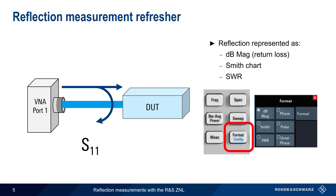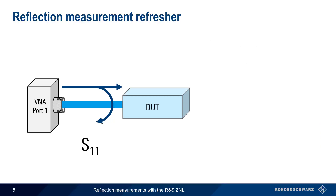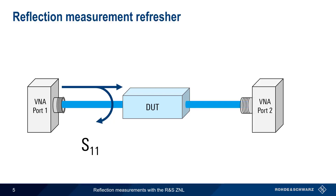One final note: in this presentation, we're explaining reflection measurements using one-port devices, but it's important to know that reflection measurements can, and often are, made on multi-port devices as well. For example, we might want to know how much power is reflected by a filter's input port — that is, S11 — as well as how much power passes from the input to the output, or S21.